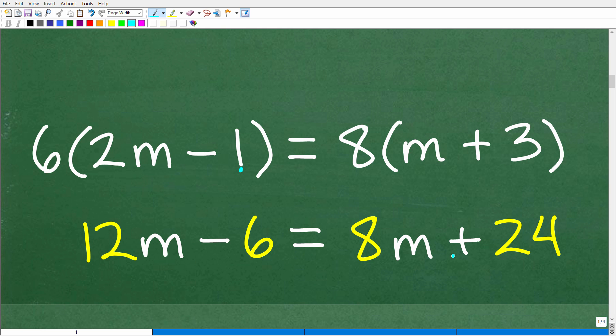It'll be like, okay, 12M minus six, doesn't make sense. You're just kind of basically grading yourself. You're looking to catch any errors right here because as you continue on, if you just made a mistake, everything you do from this point forward will be wrong. So you want to try to catch errors at every step, at every level. That's how you become a successful mathematician.